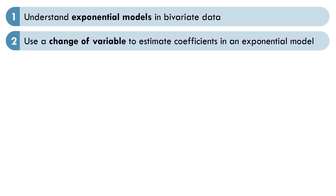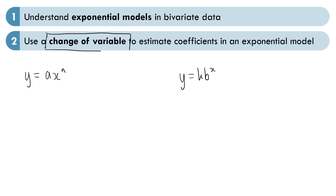So first of all, what forms can exponential models take in bivariate data? You should be familiar with these two forms: y equals ax to the power of n, and y equals k times b to the power of x. In this chapter, we should be able to use a change of variable to estimate the coefficients a, n, k, and b.